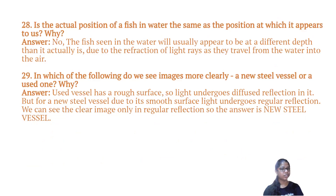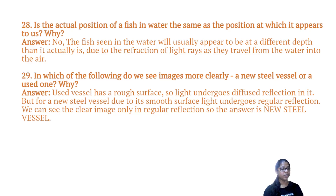Is the actual position of a fish in water the same as the position at which it appears to us? No, the fish seen in the water will usually appear to be at a different depth than it actually is, due to the refraction of light rays as they travel from water into air. In which of the following do we see images more clearly — a new steel plate or a used one? Used vessels have a rough surface so light undergoes diffuse reflection, but a new steel vessel has a smooth surface so light undergoes regular reflection. We can see a clear image only in regular reflection, so the answer is new steel vessel.